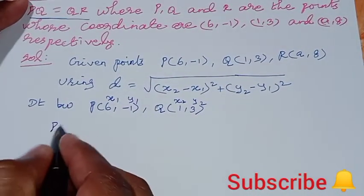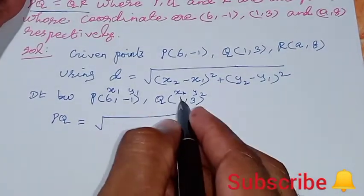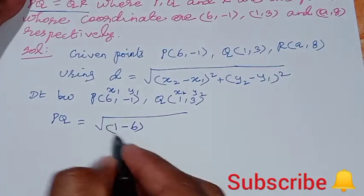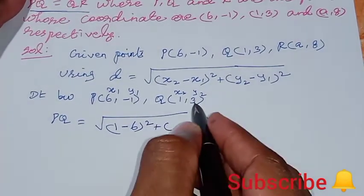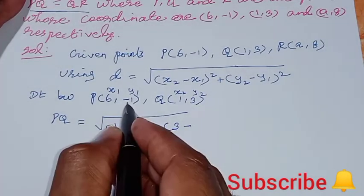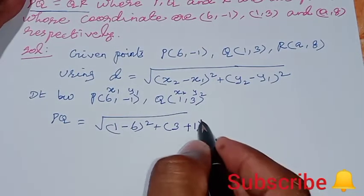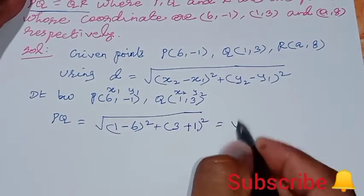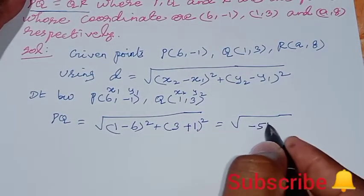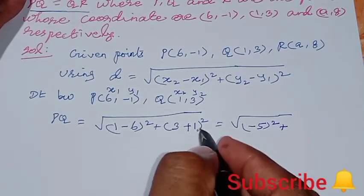PQ equals square root of (x2 minus x1). The value of x2 is 1, minus x1 value 6, the whole square. y2 value is 3, minus y1 value minus 1, the whole square. So this equals square root of (1 minus 6), which is minus 5, whole square plus (3 plus 1).